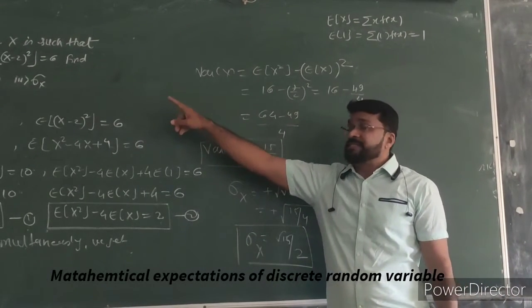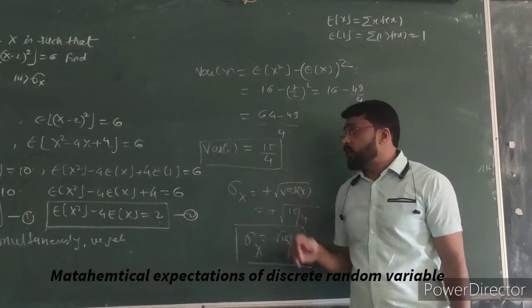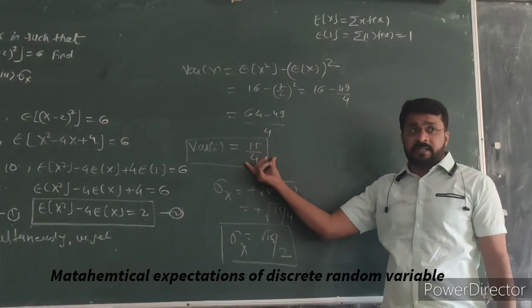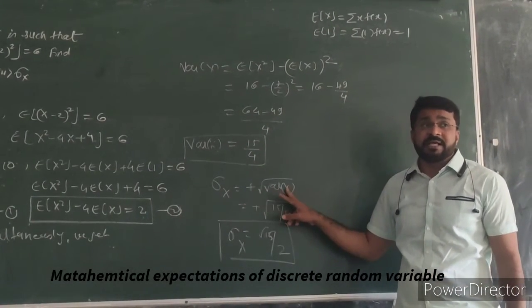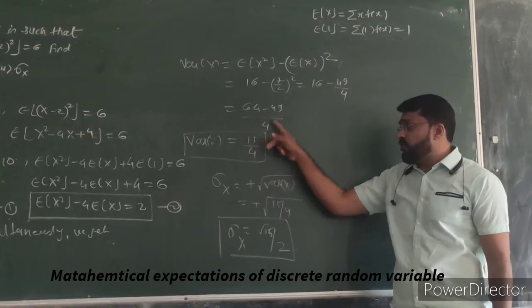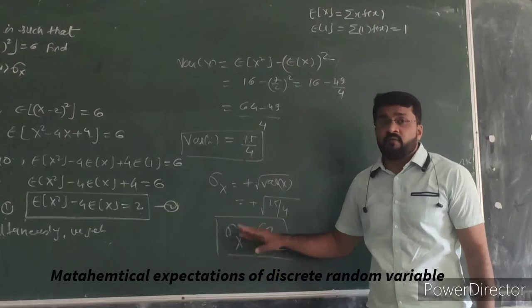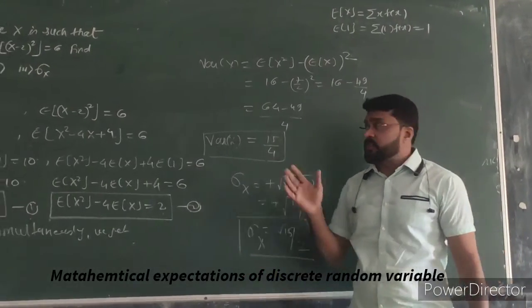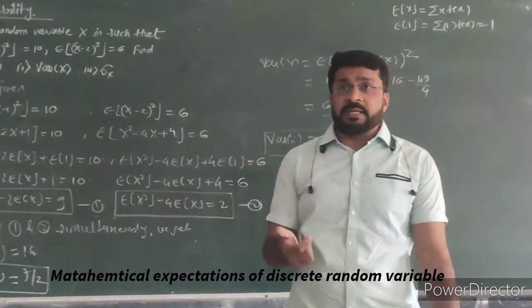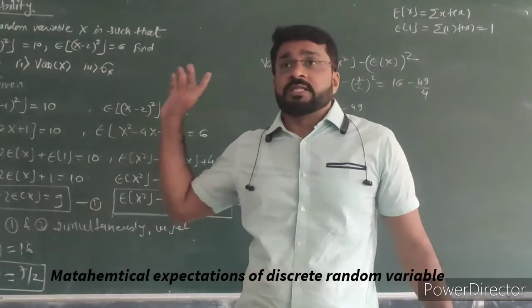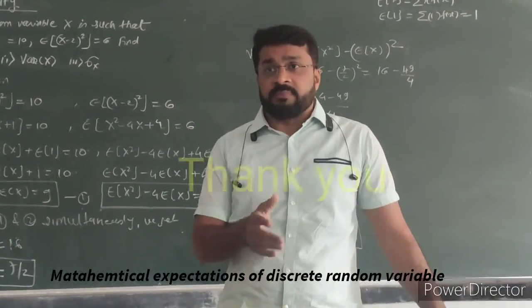And it also has to find the standard deviation, that is sigma X. So you just have to take the square root of this. The positive square root of the variance is defined as the standard deviation. Under root of 15/4, that is under root of 15 by 2, is the value of sigma X. So this is the way of finding mean, variance, and standard deviation for this problem, which is not the normal example. Thank you.